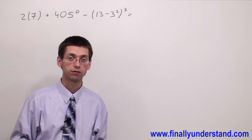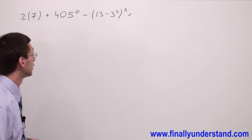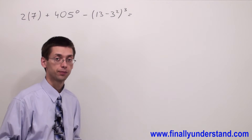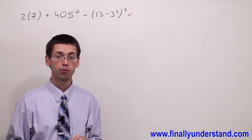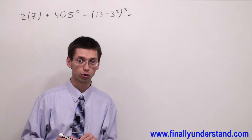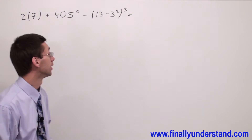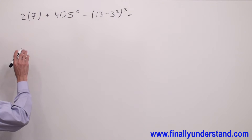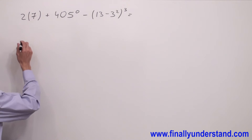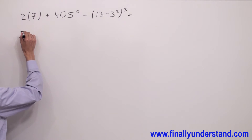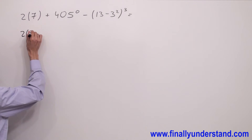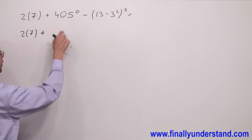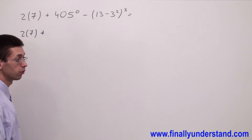I'm going to start from powers. If you get more experience with order of operations you'll use shortcuts, but at this moment I'm going to do everything step by step. So I'm going to do powers first. I'm going to copy down 2 times 7 plus 405 raised to power 0.